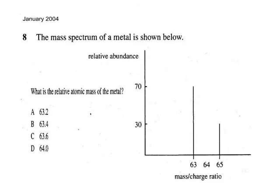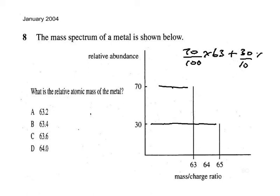To find the relative atomic mass of copper: take 70% of 63 (i.e., 0.70 × 63) plus 30% of 65 (i.e., 0.30 × 65). The answer is C.